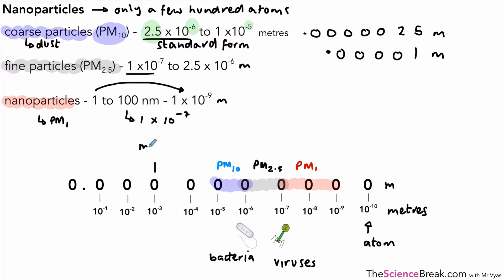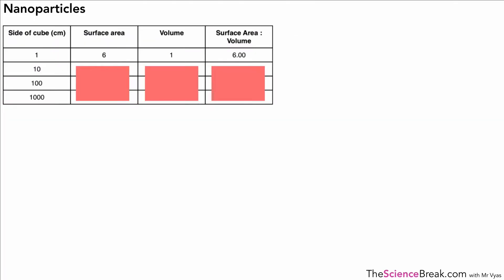It's worth adding millimeters, micrometers, and nanometers onto our scale so we can see where they all lie in terms of the sizes of things.